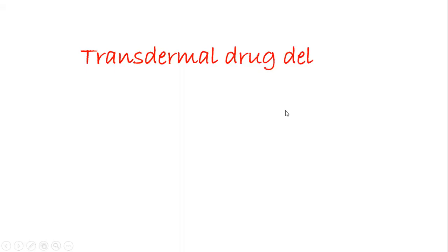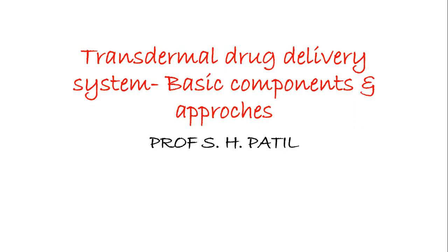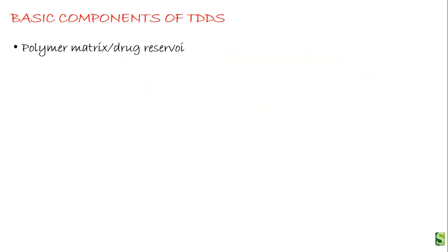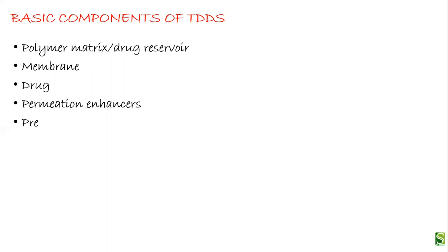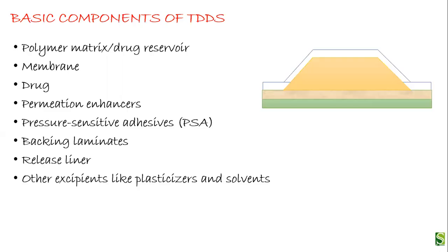Welcome, dear friends. Today we are going to learn about the components of a transdermal drug delivery system and the different approaches used to formulate it. The basic components include the polymer matrix or drug reservoir, the membrane, the drug, the permeation enhancers, a pressure sensitive adhesive material, backing laminates, release liner, and other excipients like plasticizers and solvents.